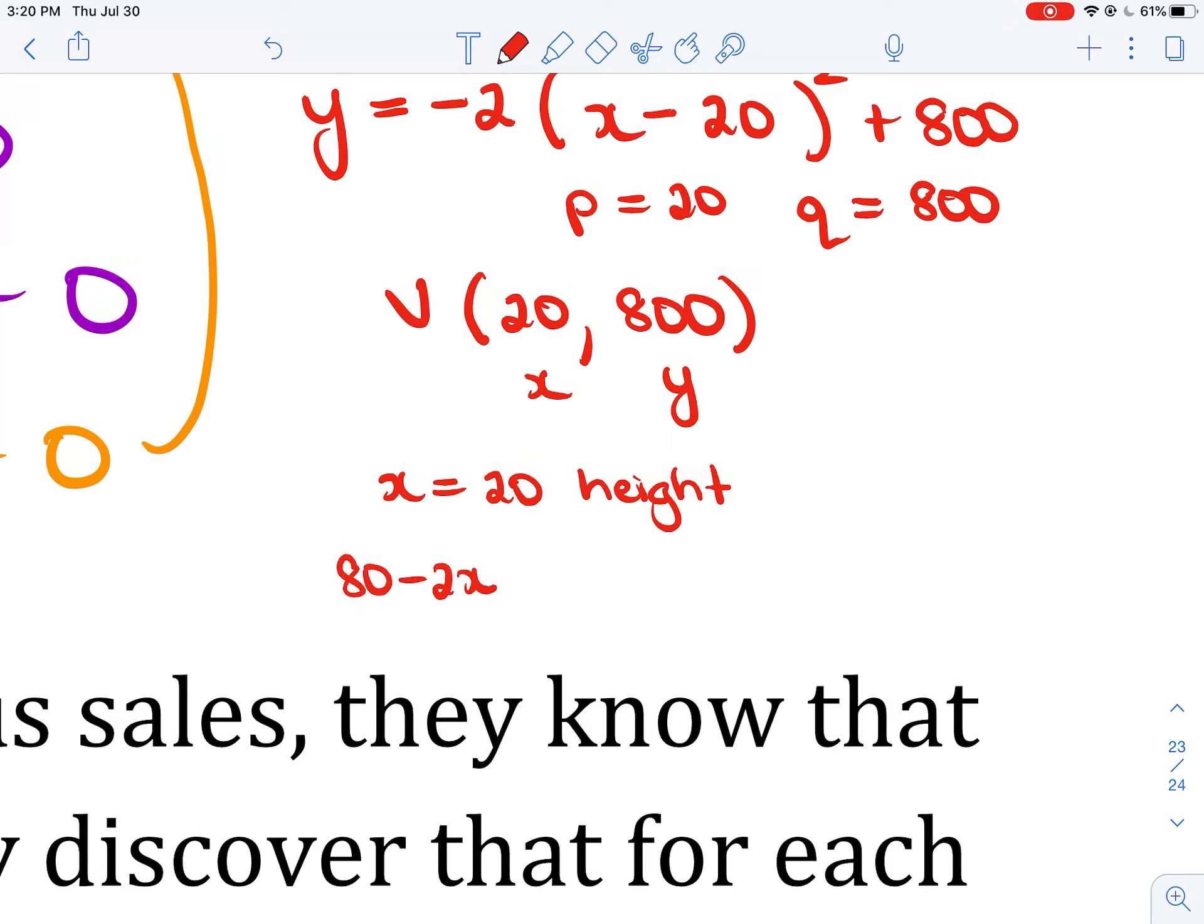And then, 80 minus 2x. Well, that's going to equal 80 minus 2 times that x value of 20. So, that's 80 minus 2 times 20. 80 minus 40, which is 40. That's my base. So, the height is 20. The base is 40.